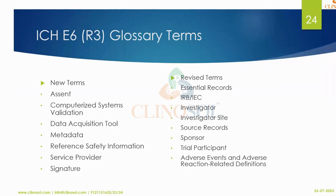New glossary terms added in E6 R3 include: assent (for small children's informed consent), CSV, data acquisition tool, metadata (data on data), reference safety information (CCDS, CCSI, SMDC, or IB), service provider (e.g., IT companies), and signatures. Revised terms include: essential documents/records, IRB, investigator site, source record, sponsor, trial participant, and adverse event and adverse drug reaction definitions.